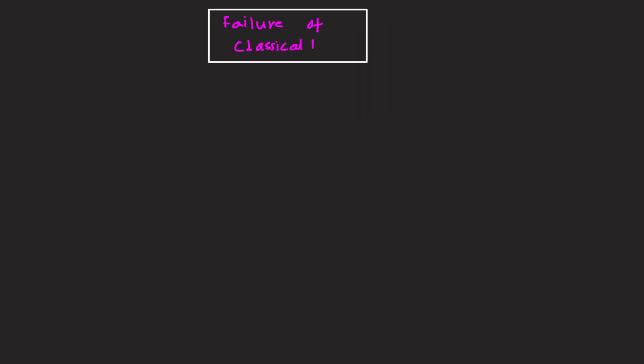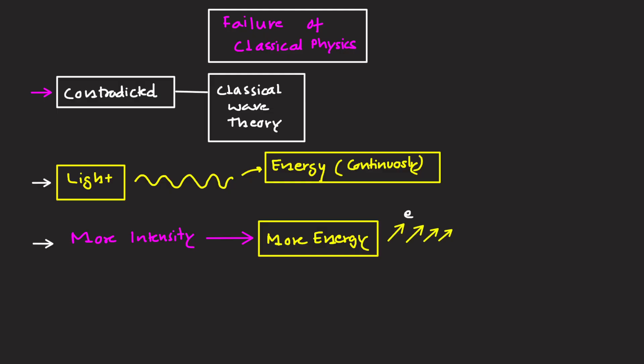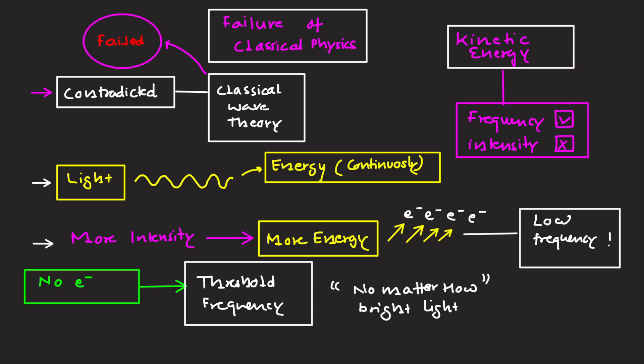Failure of classical physics. These observations contradicted classical wave theory. According to classical theory, light is a wave and energy is spread continuously. More intensity means more energy, so electrons should eventually be ejected even with low frequency light. But experimentally no electrons appeared below threshold frequency no matter how bright the light is. Kinetic energy depends on frequency, not on the intensity of the light. Clearly classical theory failed.